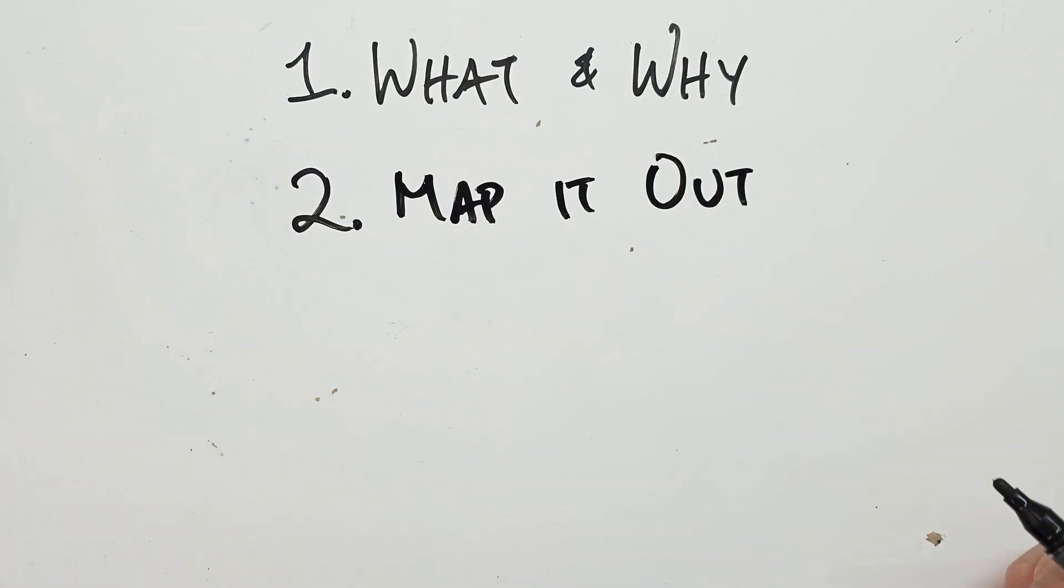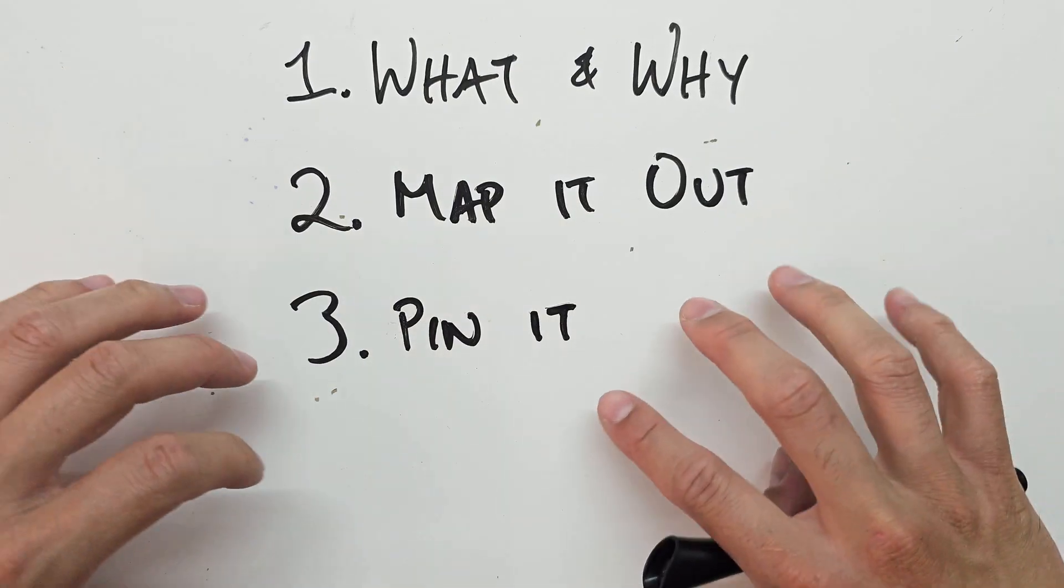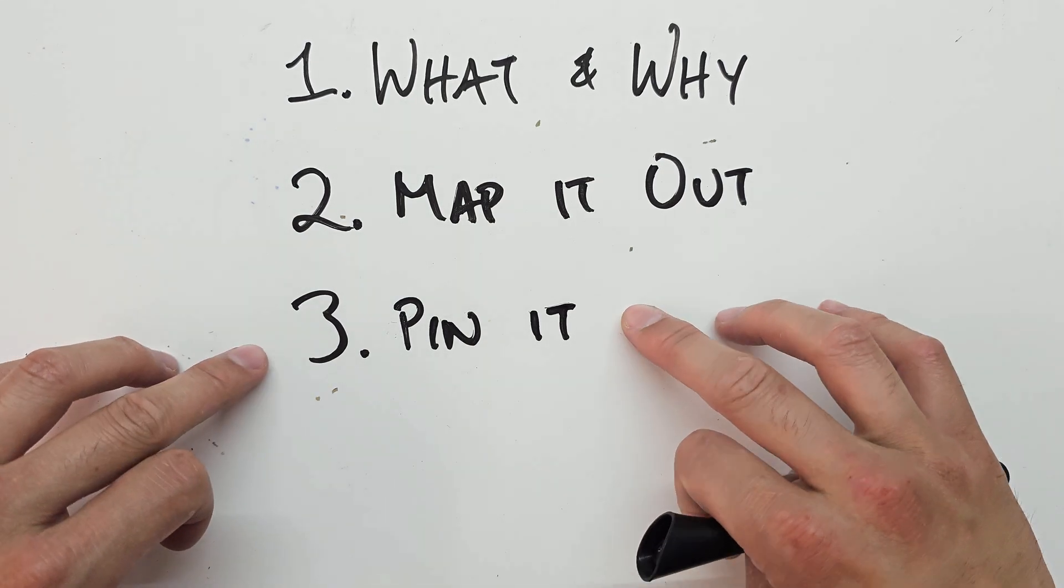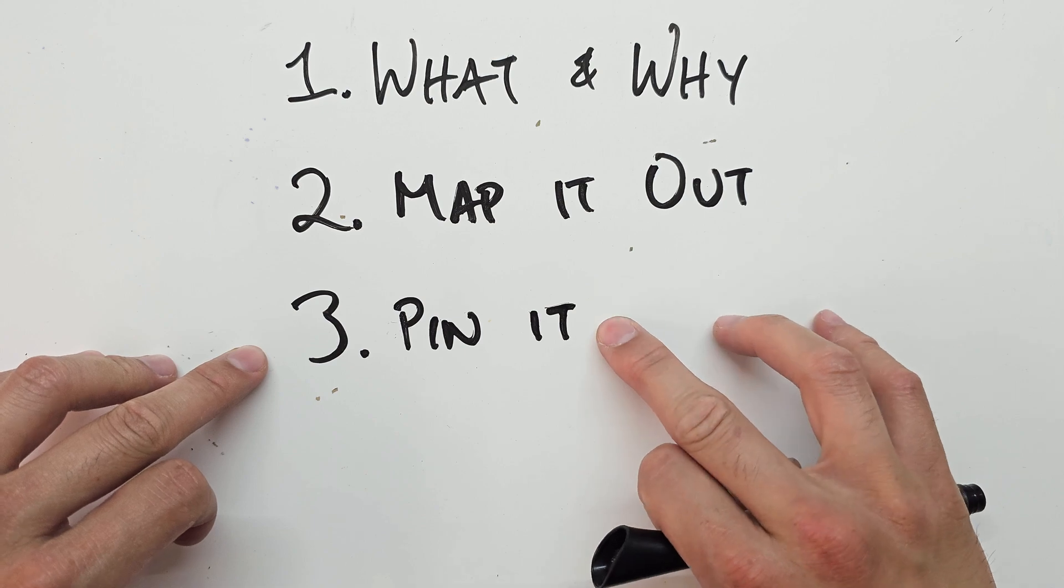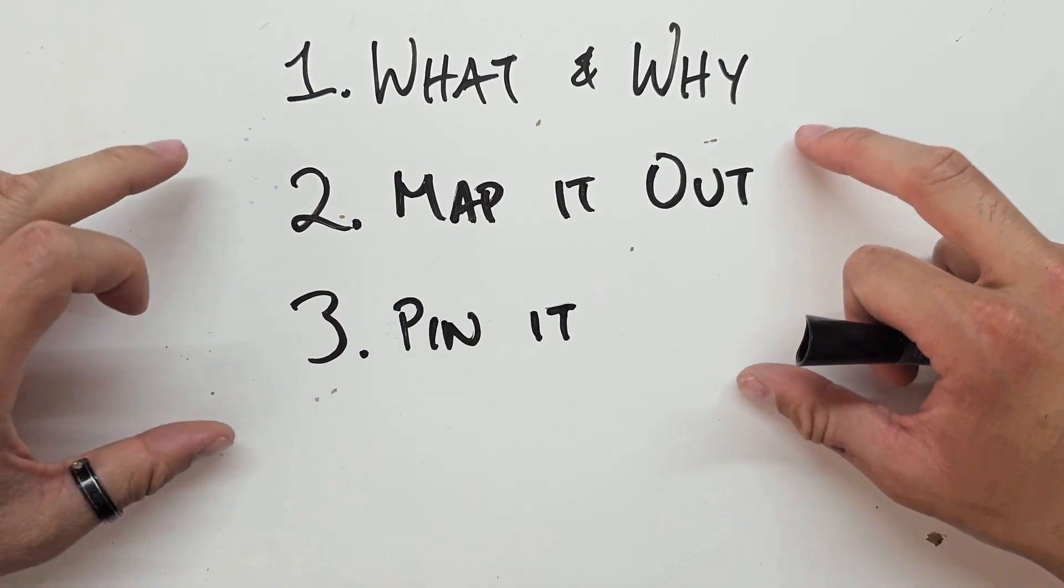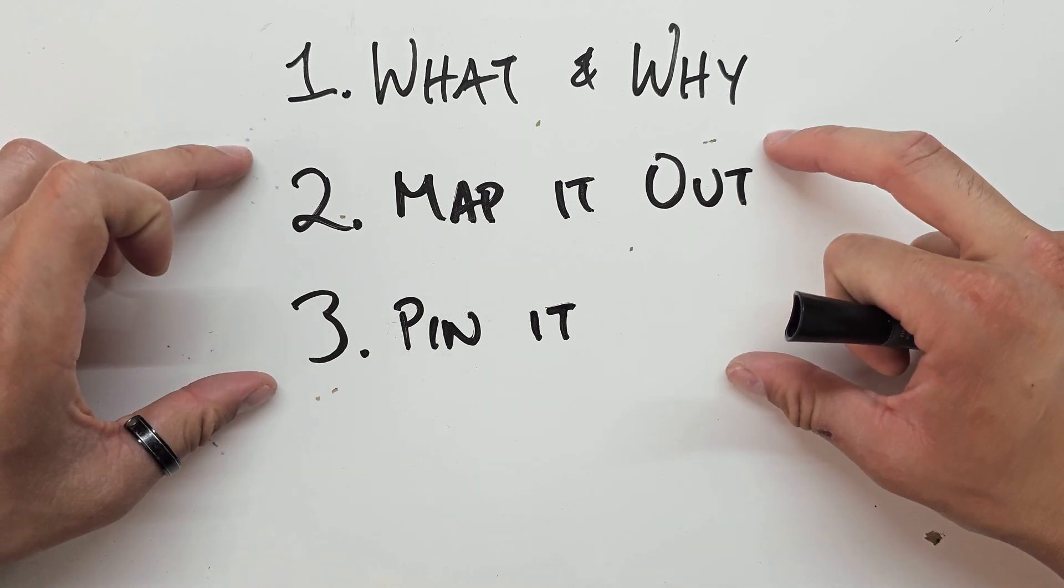Then we'll go over the two interconnected steps that we use to create our system. First, we map out the system that we're working with and then we assign meaning to each pin. We'll do an example of each to help illustrate them, but our process is literally a rinse and repeat of both of these steps.